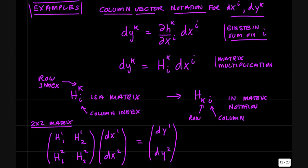So let's give a few examples of this. In column vector notation for the differentials, these dx^i's and dy^k's are columns of differentials. Then you can write this Jacobian matrix as dh^k by dx^i, converting this into a matrix multiplication.